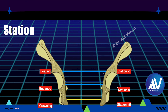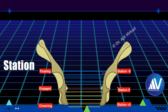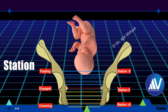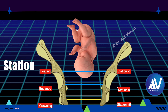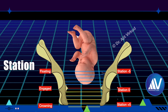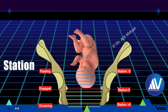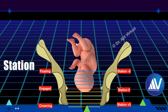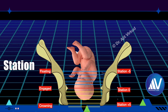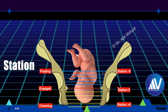This animation shows station in centimeters. The leading bony point at ischial spines is station zero. One centimeter above is station minus 1, two centimeters above is station minus 2, three centimeters above is station minus 3, four centimeters above is station minus 4, and five centimeters above — at the level of the pelvic brim — is station minus 5. The same applies below the ischial spine level: plus 1, plus 2, and so on up to plus 5 in centimeters.